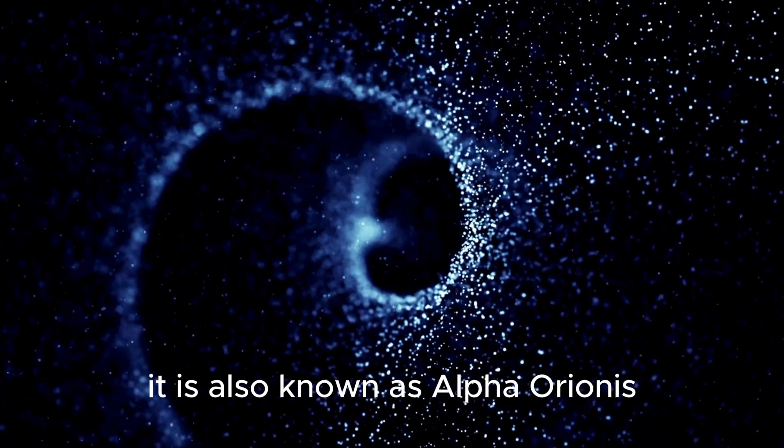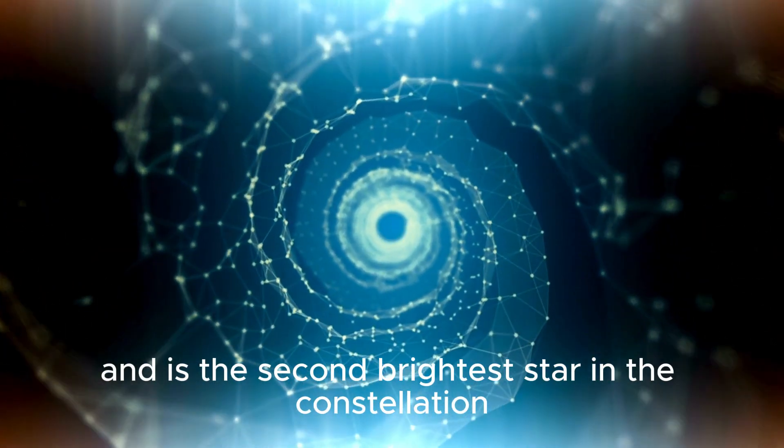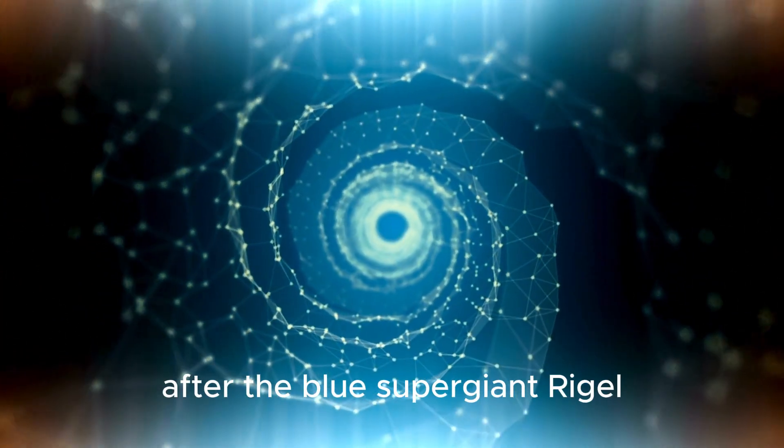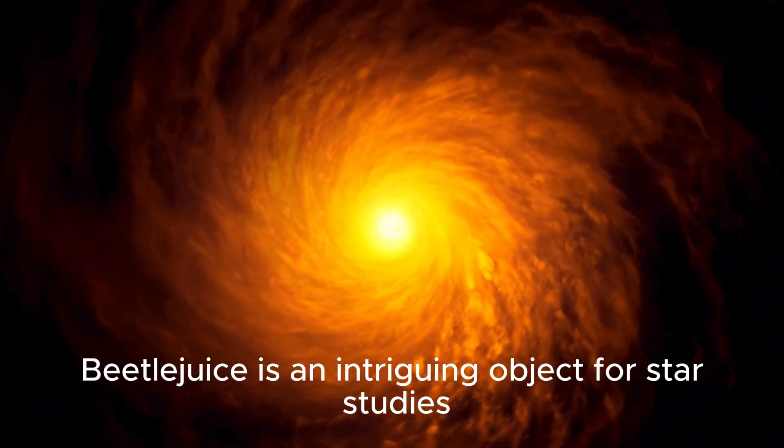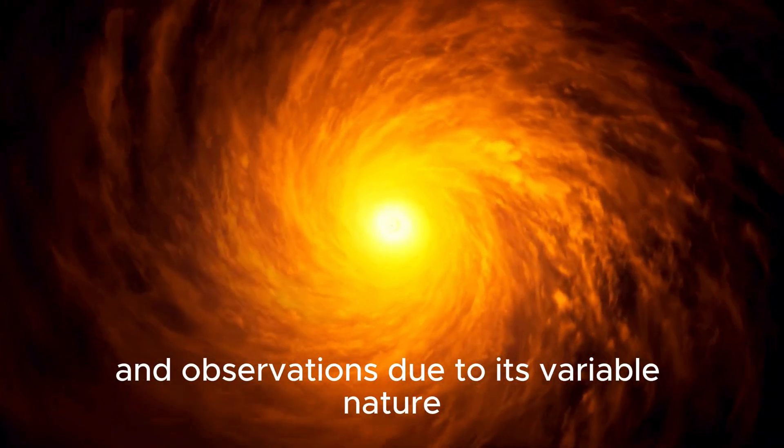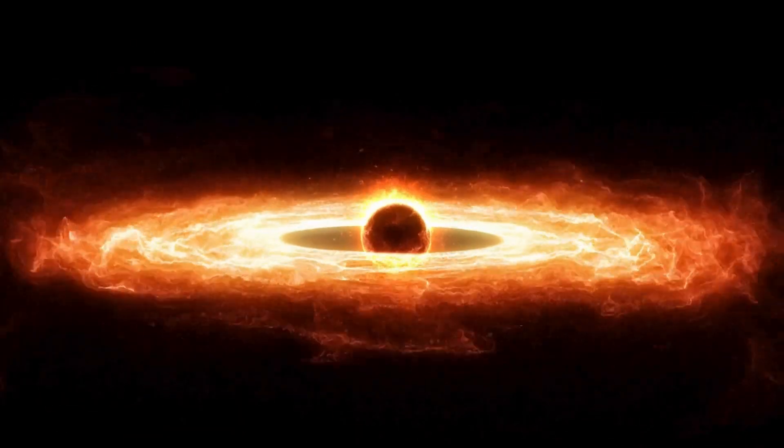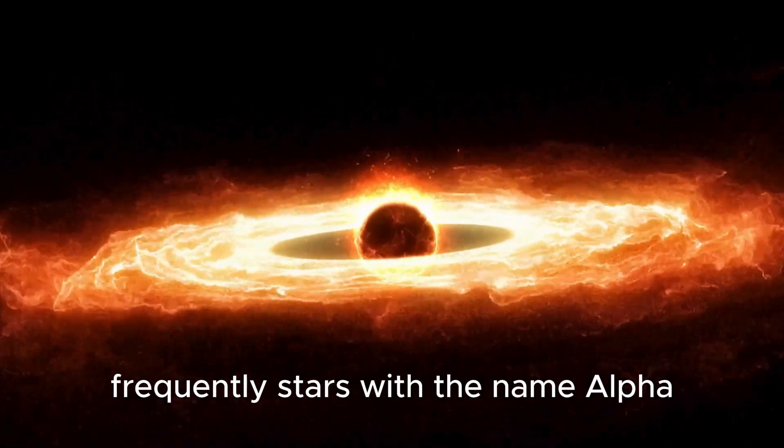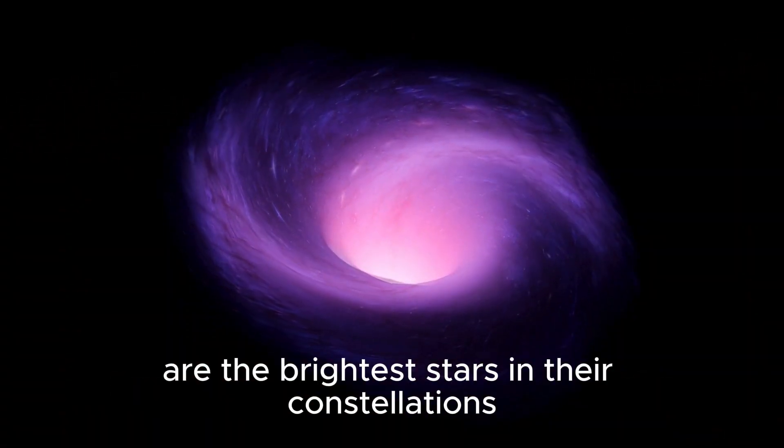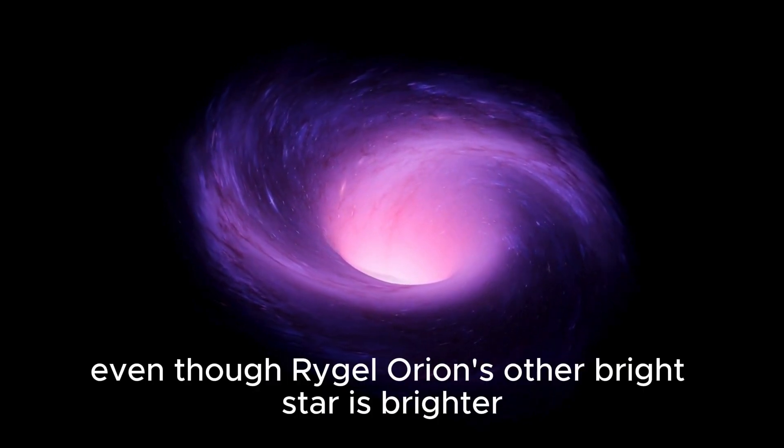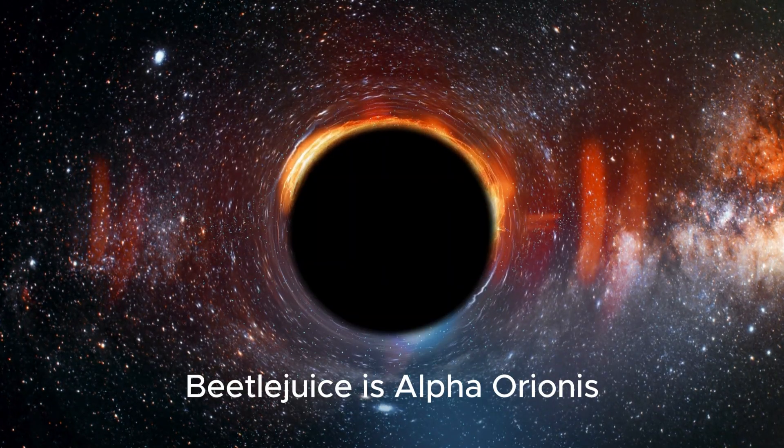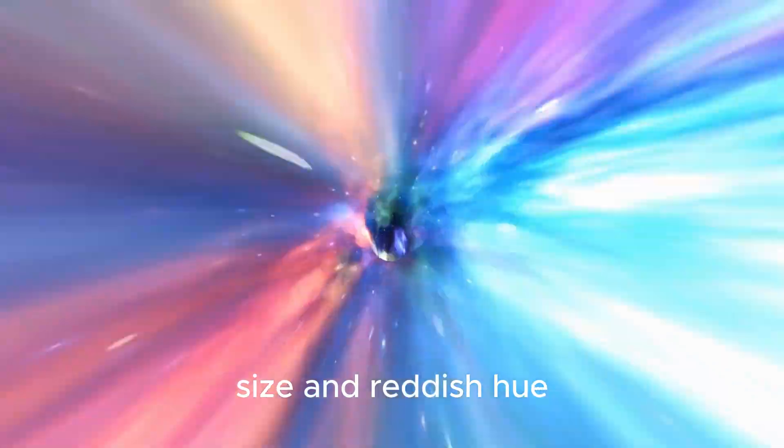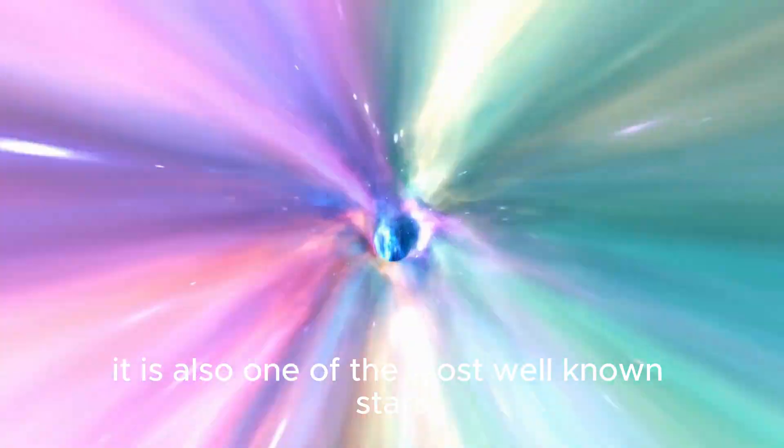It is also known as Alpha Orionis and is the second brightest star in the constellation after the blue supergiant Rigel. Betelgeuse is an intriguing object for star studies and observations due to its variable nature as well as its odd name. Frequently, stars with the name Alpha are the brightest stars in their constellations. Even though Rigel, Orion's other bright star, is brighter, Betelgeuse is Alpha Orionis due to its name, brightness, size, and reddish hue.